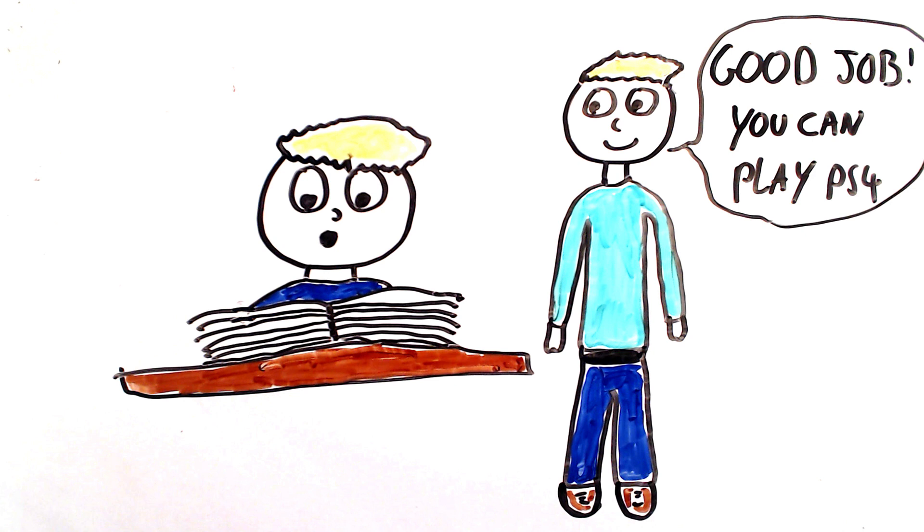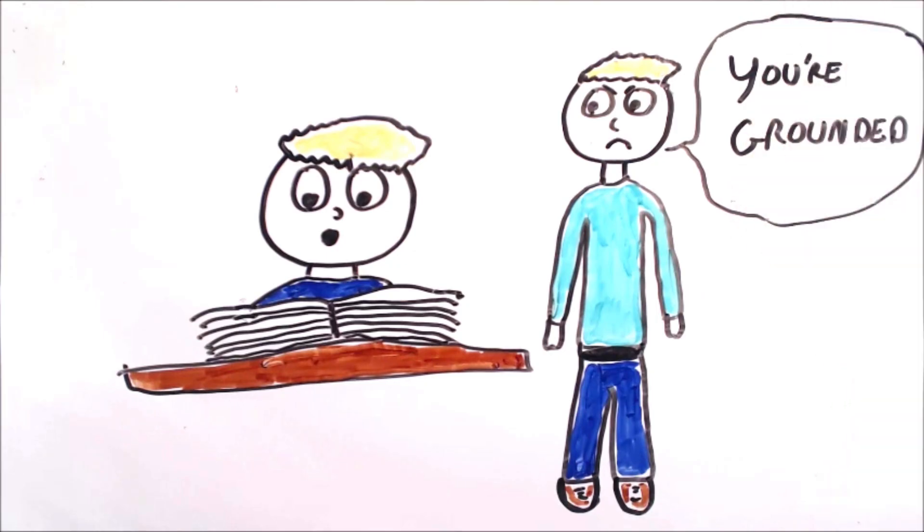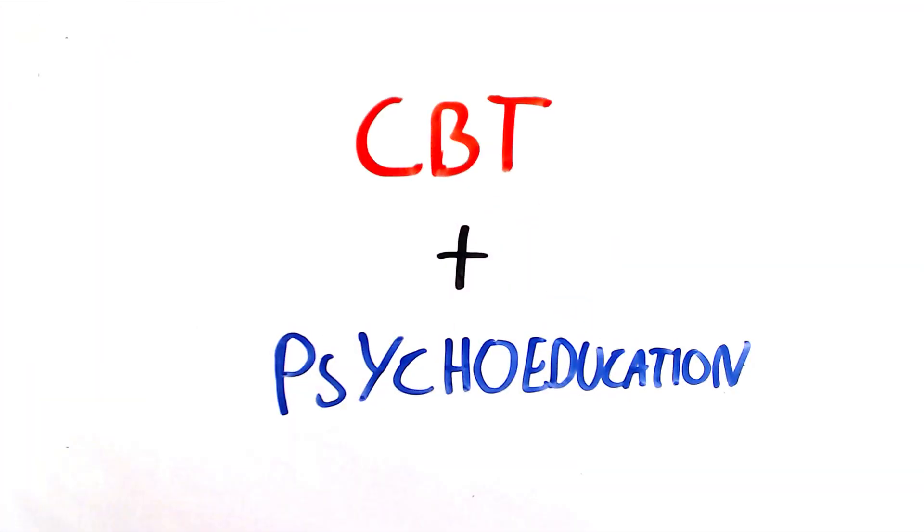This includes encouraging the child to do certain behaviors, such as completing homework, and the child is rewarded for good behavior and can have certain privileges removed for bad behavior. Cognitive behavioral therapy can also be used, as well as psychoeducation.